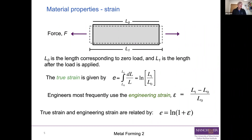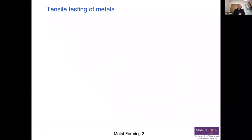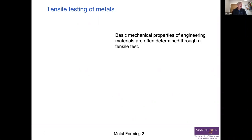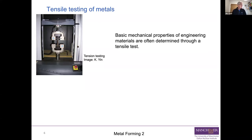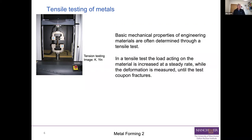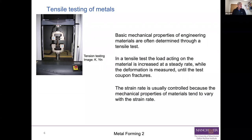We'll come back to why it's better to use true strain in large-deformation contexts. These measures are used in tensile testing of metals, which is how you typically determine the basic mechanical properties of an engineering metal. You put a specimen into a testing machine, grip it, and pull it, measuring the load-displacement response, which is then converted into a stress-strain relationship. The load is increased at a steady rate while deformation is measured until fracture, and the strain rate is usually controlled because mechanical properties tend to vary with strain rate.